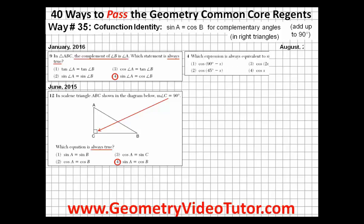Another way to put it would be the sine of an angle is equal to the cosine of 90 minus that angle.